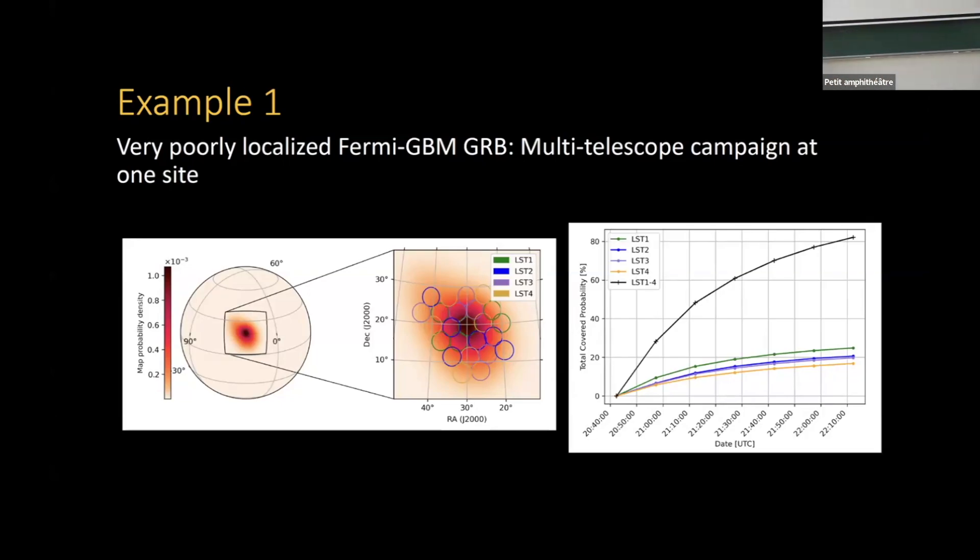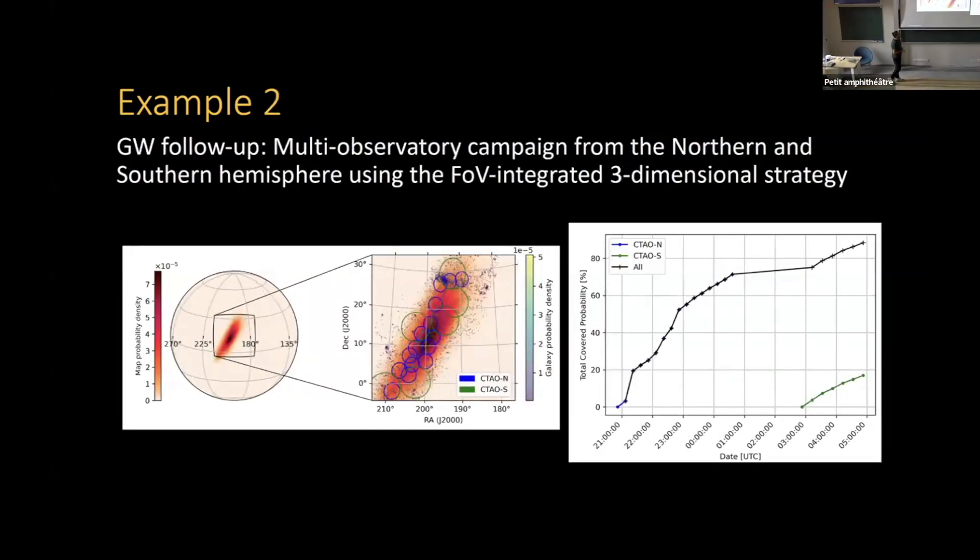Another example is a gravitational wave. Localization region is very bad, but this time we have a telescope in the north and a telescope in the south. This is the case of CTAO, for example. And to make it even more difficult, we changed the field of views of each of the telescopes. We made CTAO south bigger than CTAO north. And we said, schedule. And it started scheduling. CTAO north starts before—it starts covering the most probable galaxies in this case, because this time we said we're going to use galaxies because the event was close enough. And then CTAO south comes to fill the gaps around what CTAO north already covered.